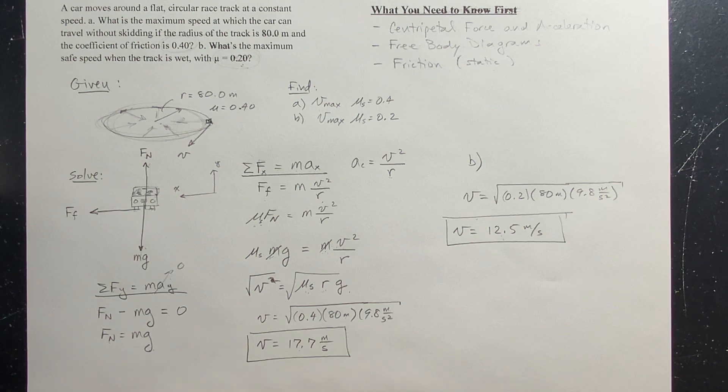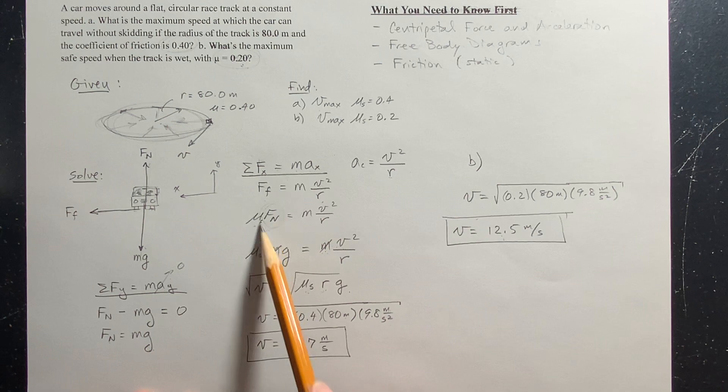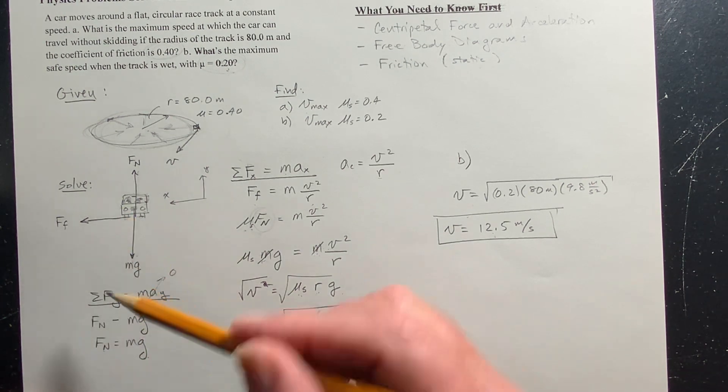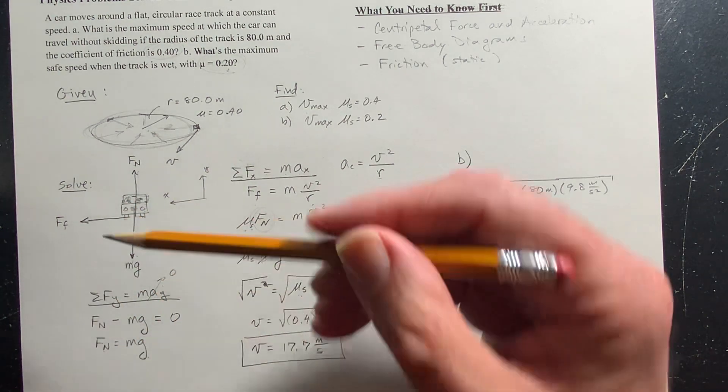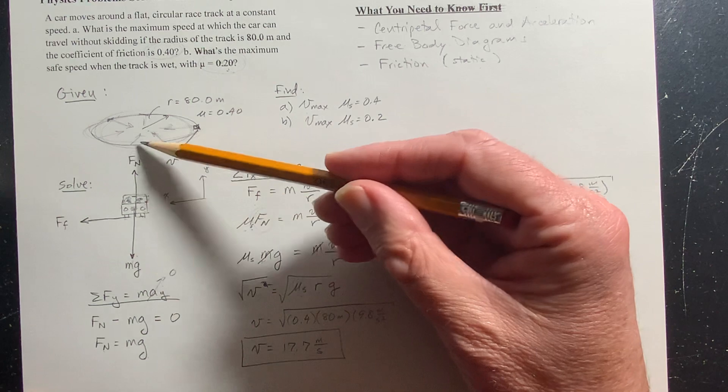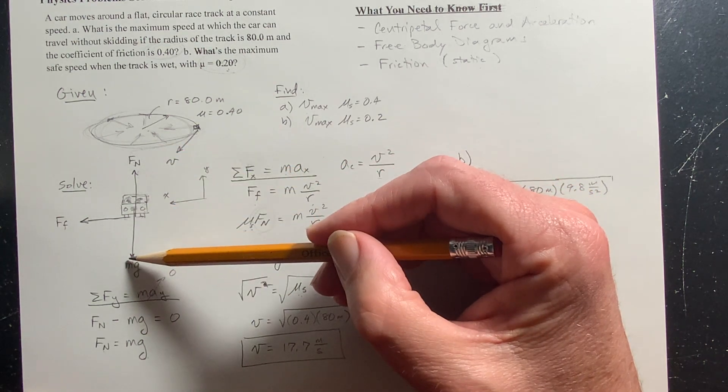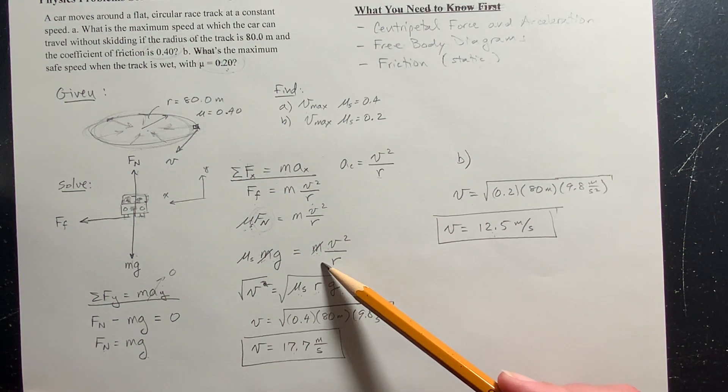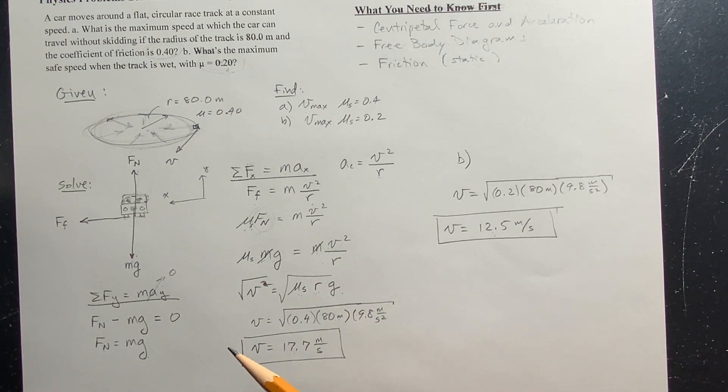One thing to add to this, notice that really the maximum speed is dependent on that normal force. Here's something you might be interested in knowing. In this situation right here, the normal force is just supporting the weight. But what if I could figure out a way of making this normal force even bigger than the weight? If the normal force is bigger than just the weight, if it's mg plus something else, well, that means I can have a faster maximum speed. So how do race cars get a bigger normal force between the tires and the road?